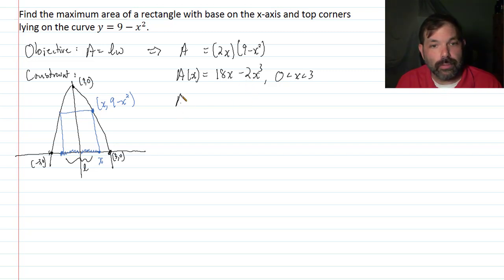All right, so then let's use the first derivative to find critical numbers. A prime of x would be 18 minus 6x square, setting this equal to 0. So then 6x square must equal 18. x square is 3. So then x is going to be the positive square root of 3. And it must be positive because of our domain.